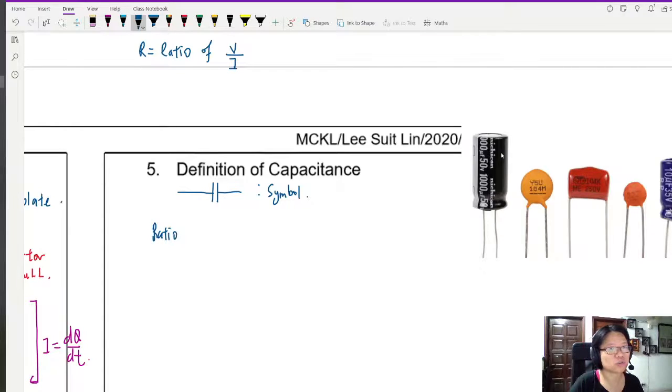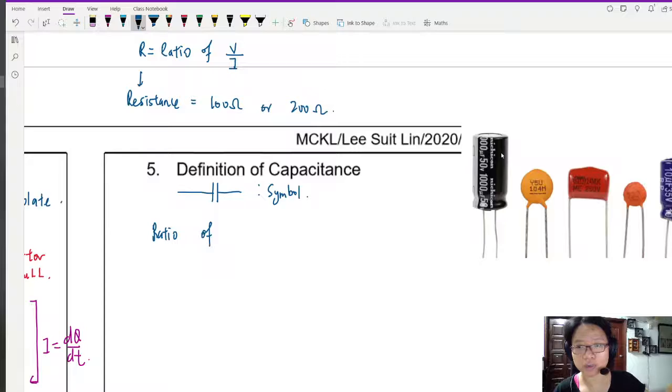But before you simply ratio something, like you follow V over I, you'd think a bit first. This R resistance, that number, let's say if we think about 100 ohm or 200 ohm, this number tells us how good the electronic component is at doing its job. For example, if you are a resistor and your job is to slow down the current flow, a 200 ohm resistor is better at that job than a 100 ohm resistor. So that number kind of have to make some sense to us before we simply anyhow just ratio two things.